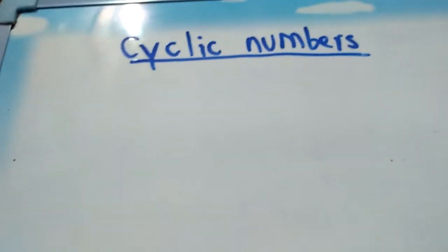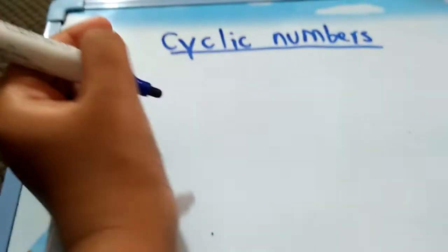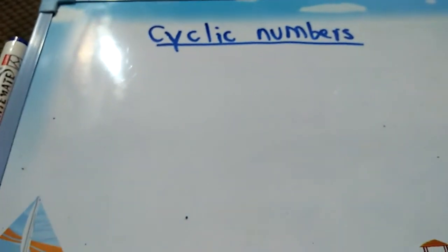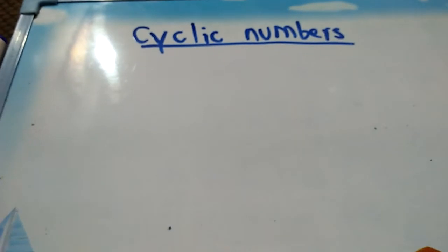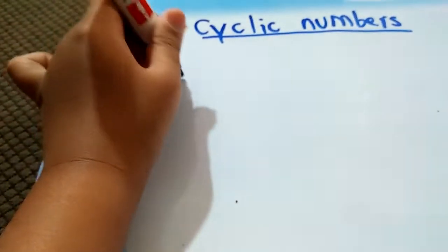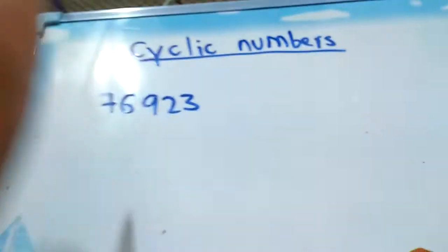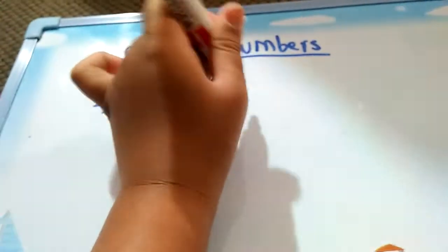In this video I'm going to tell you about cyclic numbers. First let's look at an example. Cyclic numbers are also known as digit changers — that's my own words, but let us keep it as cyclic numbers.